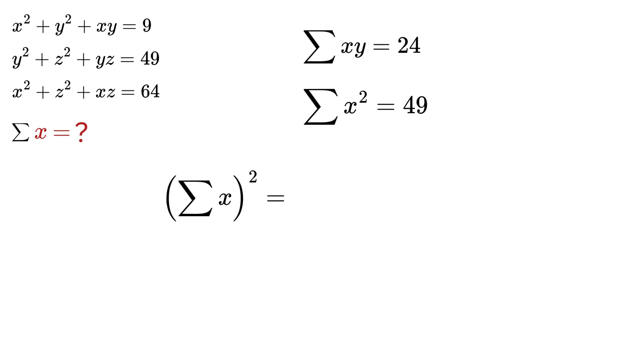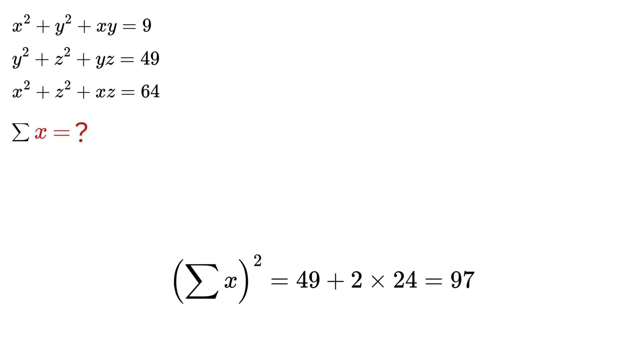Now we know that (Σx)² equals Σx² + 2Σxy, which becomes 49 + 2(24), giving us 97. Taking the square root on both sides, we get x + y + z equals √97, and that's our final answer.